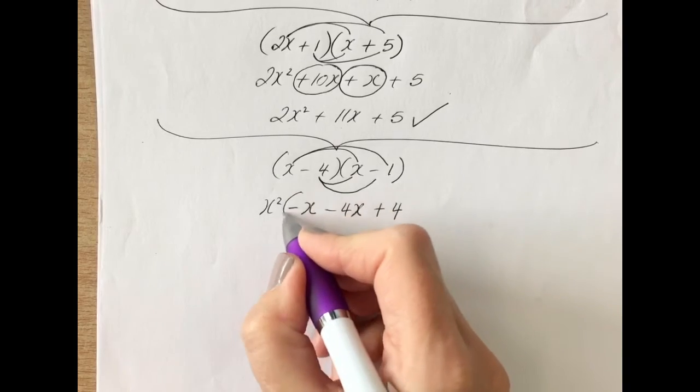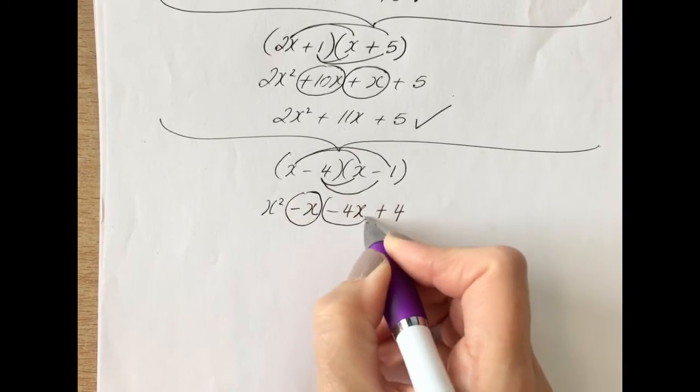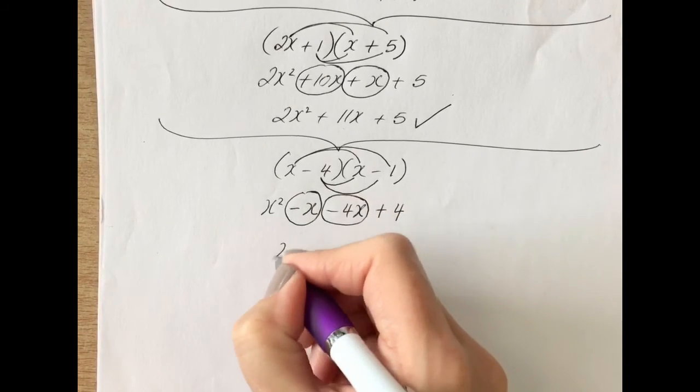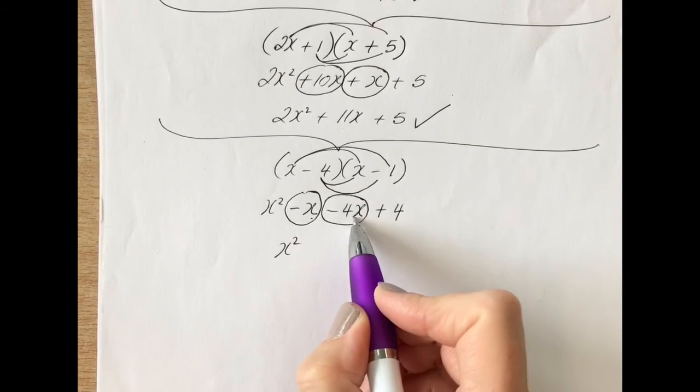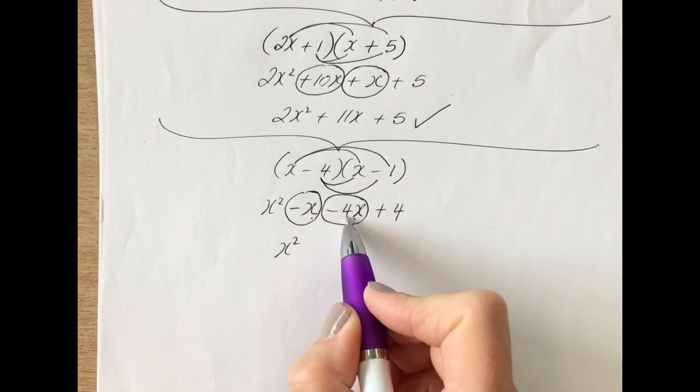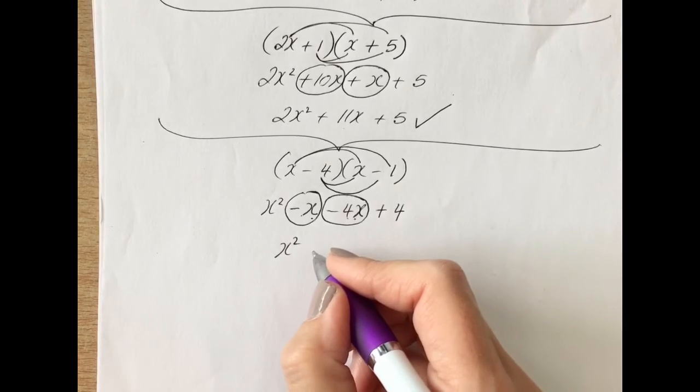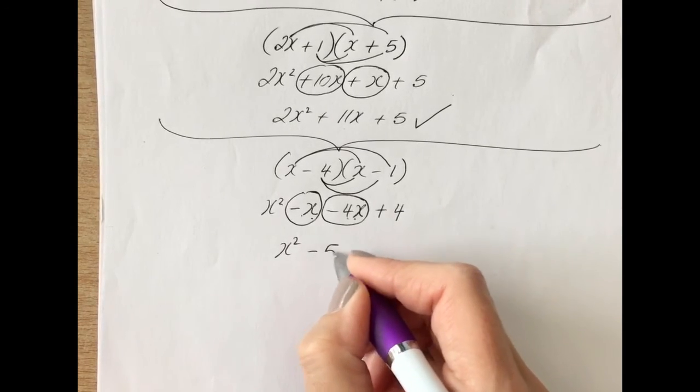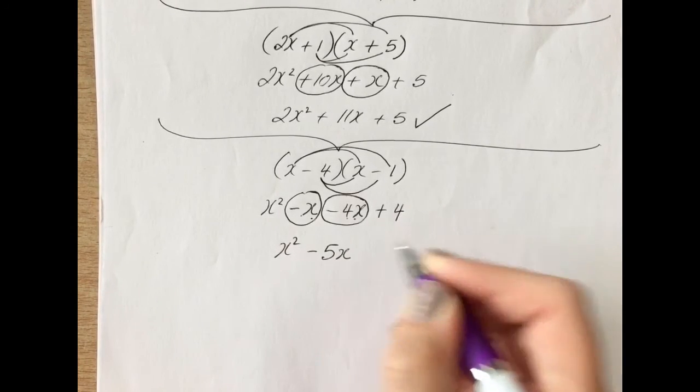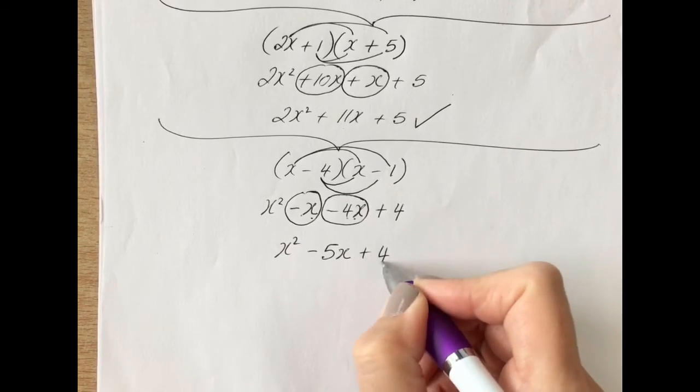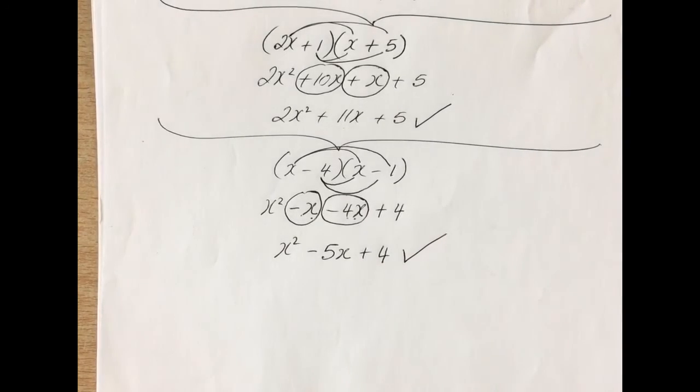Now adding together your minus x and your minus 4x, we get x squared minus x minus 4x, or minus 1 minus 4 is the number work here. That gives you minus 5x plus 4, and that is your answer.